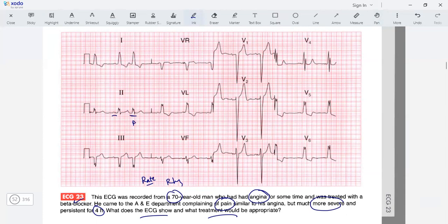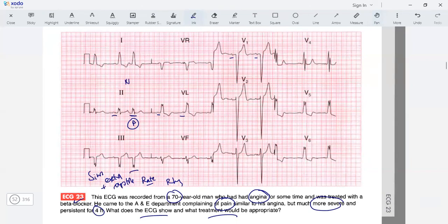Then another P wave, this is okay sinus. Seems to be sinus rhythm with some premature complexes. So sinus rhythm with some extra systoles.